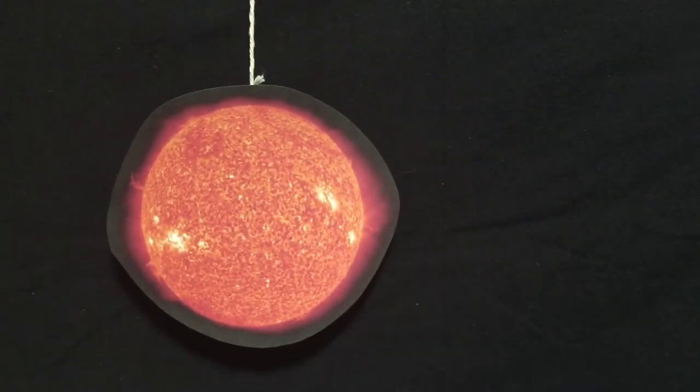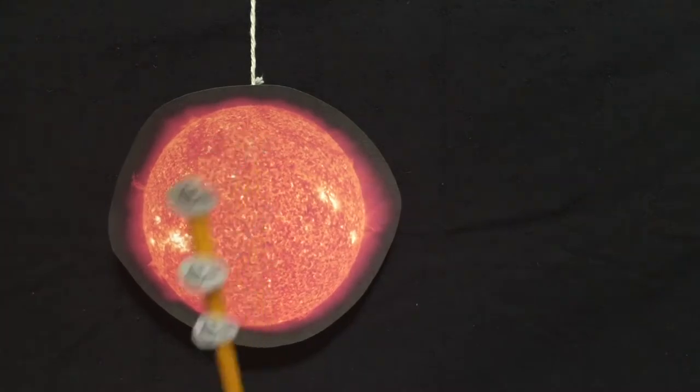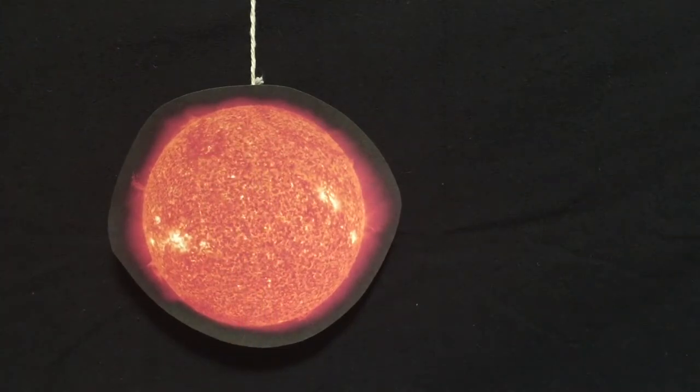First, we're going to start off with our sun. In addition to the light and heat that it produces, it also gives off a stream of charged particles called the solar wind.